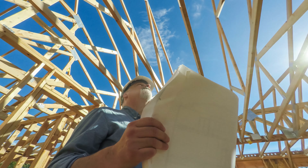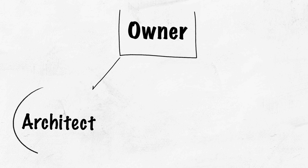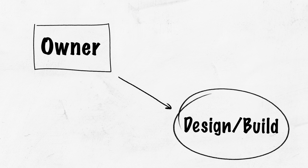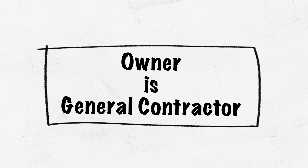We're going to go over how to hire a contractor and by what method. There are three types of arrangements in going about constructing your project. Those three arrangements are: hiring an architect and then hiring a contractor independent of that architect; second, hiring a design-build team where the architect and the construction company are merged as one; and third, the homeowner or business owner serving as the general contractor.